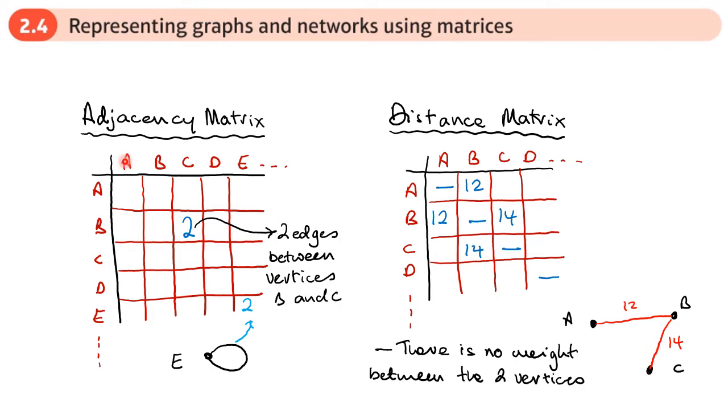Now you should be able to take a graph and complete an adjacency matrix from the graph. You should also be able to, if you're given an adjacency matrix, construct a graph from it. The same can't be true of a distance matrix. You can't construct a graph just from a distance matrix because you don't know the number of edges between different vertices. But one thing we can say is that if the graph is not directed, then our table here should be symmetrical about the leading diagonal.